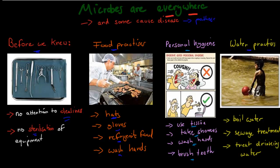When it comes to water practices, many diseases affect young children in developing countries, often because water contains lots of pathogens. Kids might drink or play in that water and get infected. A couple of things we can do to reduce pathogens in water: first, we often boil our water before drinking it. We now have sewage treatment plants to remove sewage that would otherwise enter the water. And we treat drinking water through water treatment plants to make sure the water from our taps is clean.